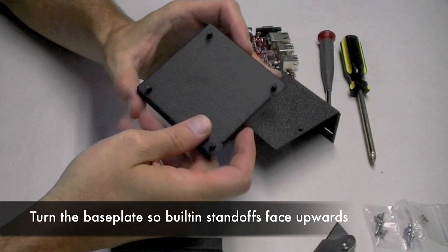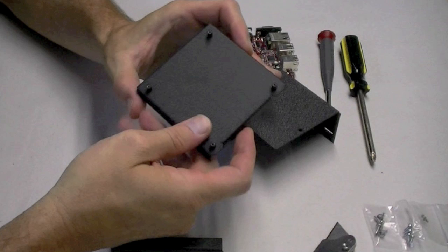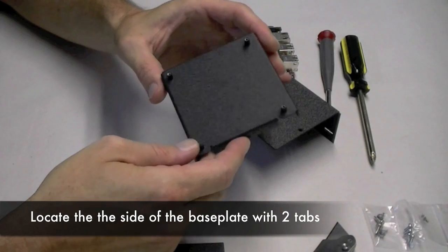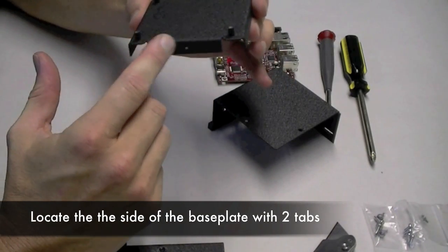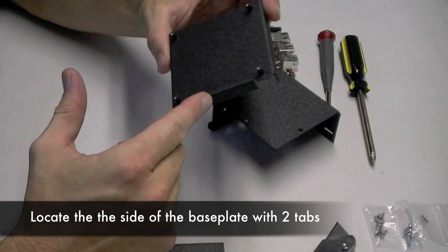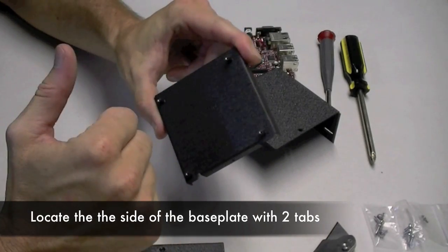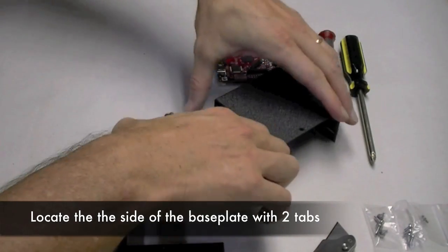You'll notice some built-in standoffs where we'll mount the BeagleBoard. Locate the side of the base plate that's got the two tabs. There's only one side that's like this and this is a significant feature of this base plate that you'll use later.